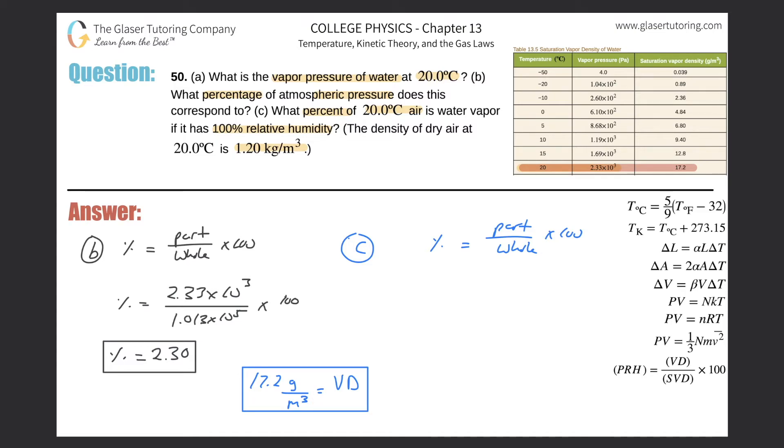We have 17.2 grams per cubic meter. I need to get rid of the gram, so the gram goes on the bottom. There's a thousand grams to one kilogram. Grams cancel, and we get 0.0172 kilograms per cubic meter.